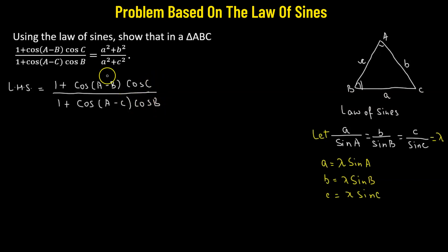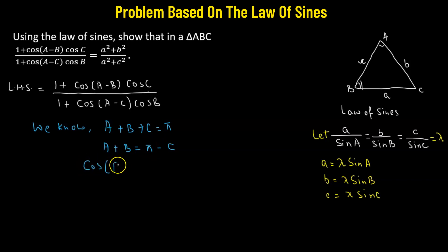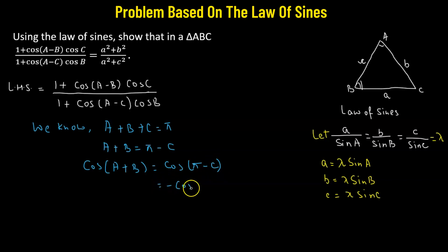We'll rewrite cos C and cos B using the angle sum property. Since A + B + C = π, we have A + B = π − C. Taking cosine of both sides: cos(A + B) = cos(π − C) = −cos C. This means cos C = −cos(A + B).